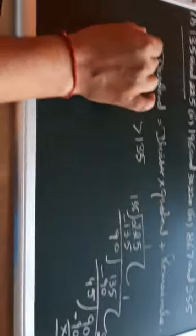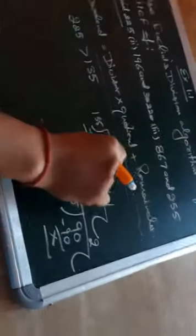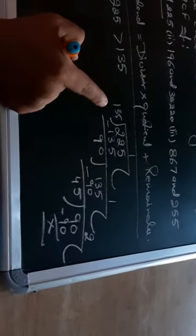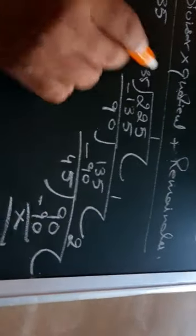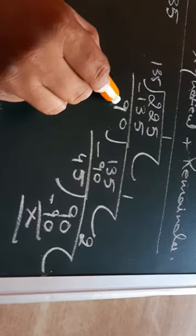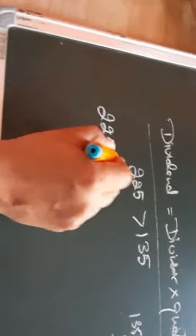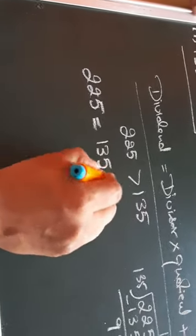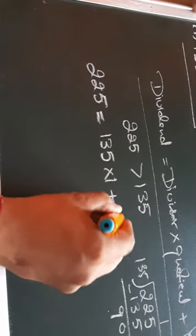What is the system of writing this is dividend is equal to divisor into quotient plus remainder. Let's move to the first part. In this, 225 is dividend, 135 is divisor, 1 is quotient and 90 is remainder. So we will write it as 225 is equal to 135 into 1 plus 90. The first part, this part is over.